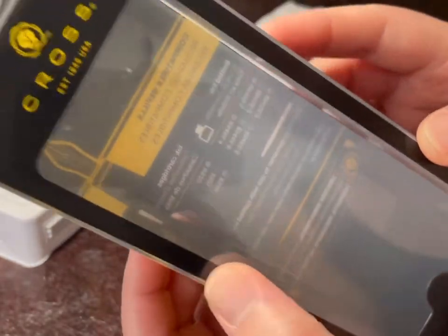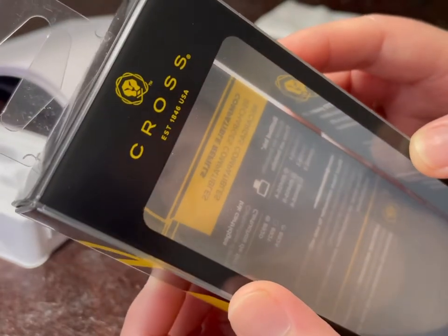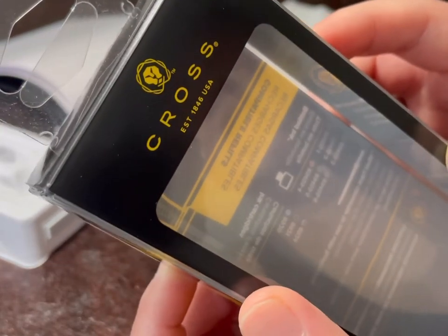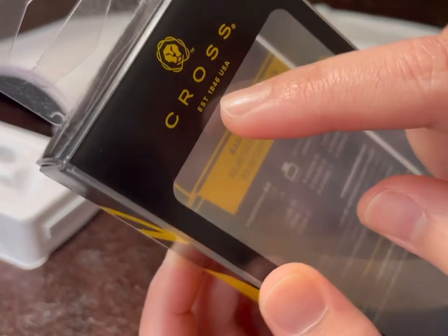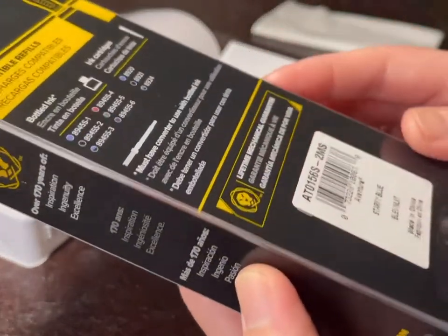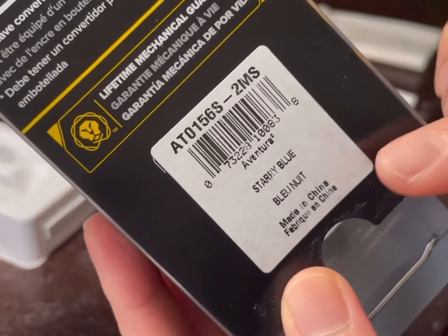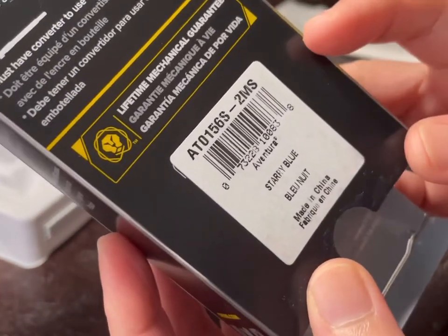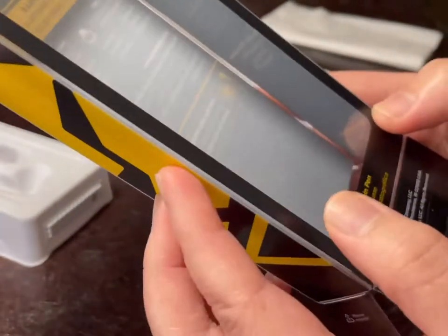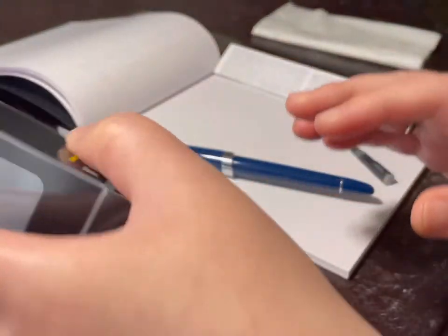So Cross is basically a pen company that has been established in 1846. And if you look here, it says made in China. So I am guessing that they are designing this pen in the US, but they are outsourcing their manufacturing.